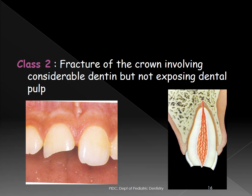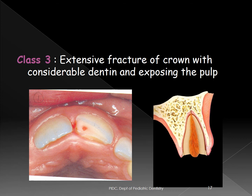Class II is slightly more severe: there is fracture of enamel and considerable exposure of dentine, but without exposure of the dental pulp. The dental pulp remains unexposed in Class II.